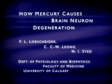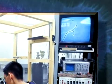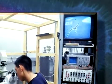How Mercury Causes Brain Neuron Degeneration. Mercury has long been known to be a potent neurotoxic substance, whether it is inhaled or consumed in the diet as a food contaminant.